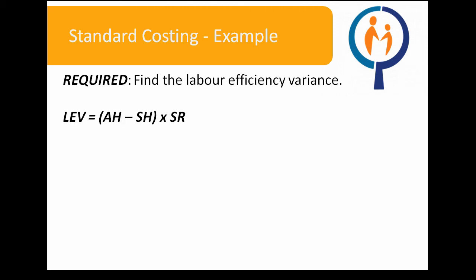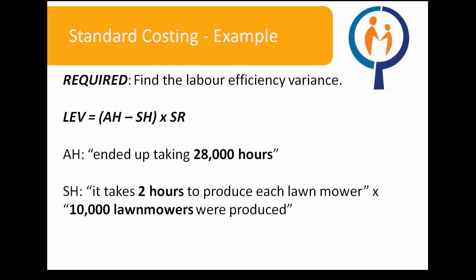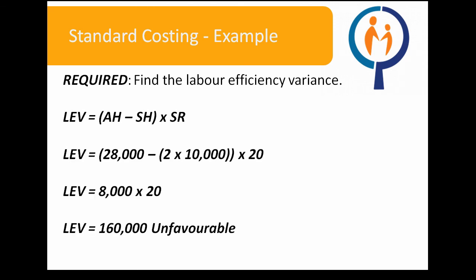Finally, let's calculate the labor efficiency variance. The company ended up using 28,000 hours to produce its 10,000 lawnmowers, so 28,000 is our actual hours used. Our standard hours can be calculated by multiplying the two hours estimated to produce each lawnmower by the 10,000 lawnmowers actually produced. The standard rate is quoted at $20 per hour. The result is a $160,000 unfavorable variance, as the actual hours used is more than the standard hours expected.